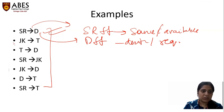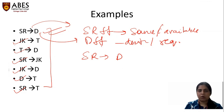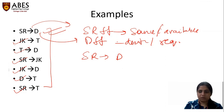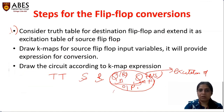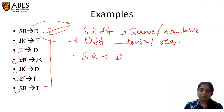Likewise, there are other conversions: JK to T, T to D, SR to JK, JK to T, D to T, and SR to T. So for example, if I am converting SR flip-flop to D flip-flop, D is called the destination or required flip-flop and SR is called the source or available flip-flop. Please keep in mind your first step: you have to make the truth table for the destination flip-flop and the excitation table for the SR flip-flop.